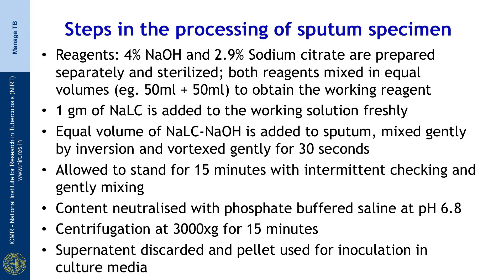1 gram of sodium N-acetyl-L-cysteine is added to the working solution freshly. An equal volume of NALC-NaOH is added to the sputum, mixed gently by inversion and vortexed gently for 30 seconds, then allowed to stand for 15 minutes with intermittent checking and gentle mixing. The content is neutralized with phosphate buffered saline at pH 6.8, then centrifuged at 3000 g for 15 minutes. The supernatant is discarded and the pellet is used for inoculation in culture medium.